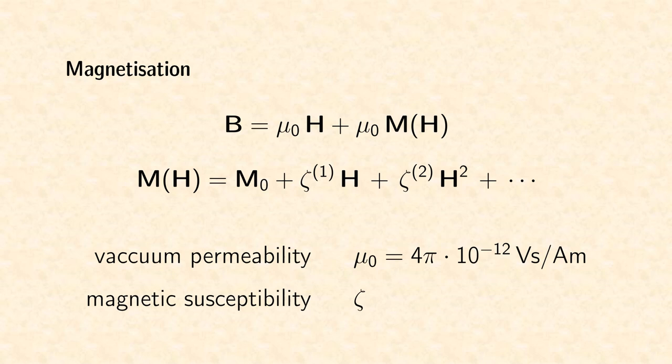Magnetization is in general an arbitrary function of the external magnetic field. We can also expand this function to a Taylor series. Again, in most materials, the first order term with the dimensionless magnetic susceptibility tensor zeta 1 is by far the most dominant one.